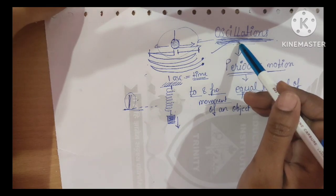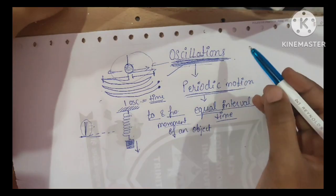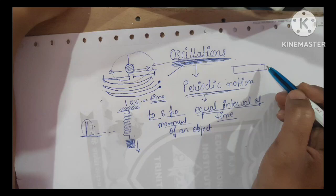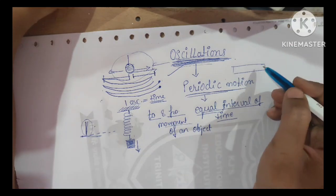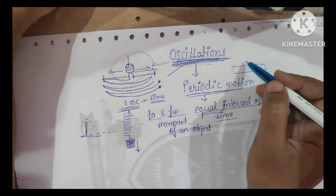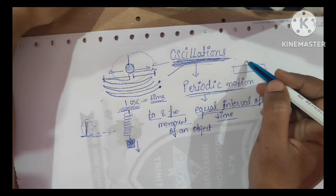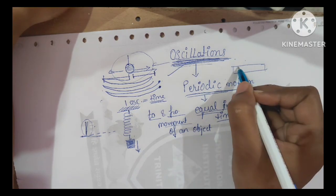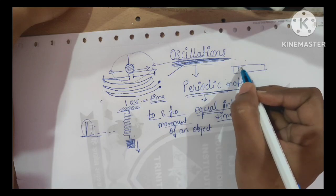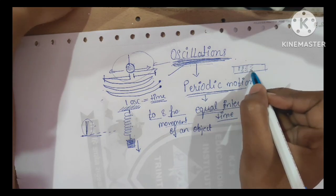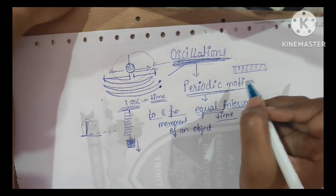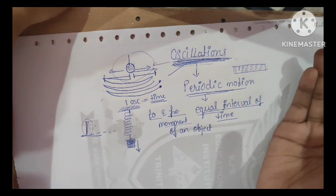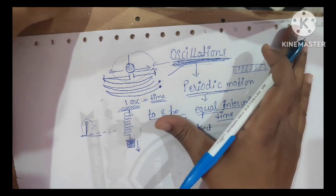Vibrational motion is another best example. If you see atoms in any element, the atoms vibrate — their movement about the mean position is a to and fro movement. This is also called vibrational motion. These are oscillations.